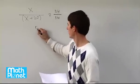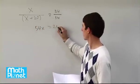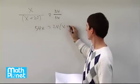So that gives us 54x on this side, and then we have this quantity times 24 here, so 24 times the quantity x plus 20.